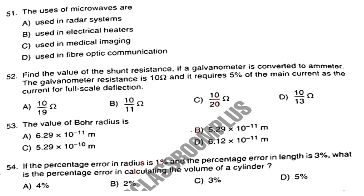Question number 52. Find the value of shunt resistance if a galvanometer is converted to an ammeter. The galvanometer resistance is 10 ohm and it requires 5% of the main current for full scale deflection. The answer is Option A: 10/19 ohm.